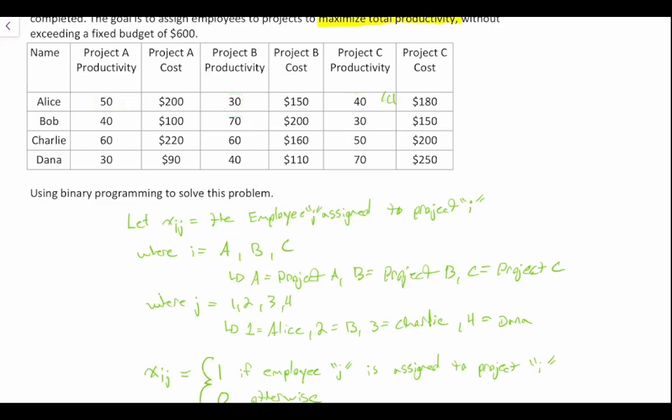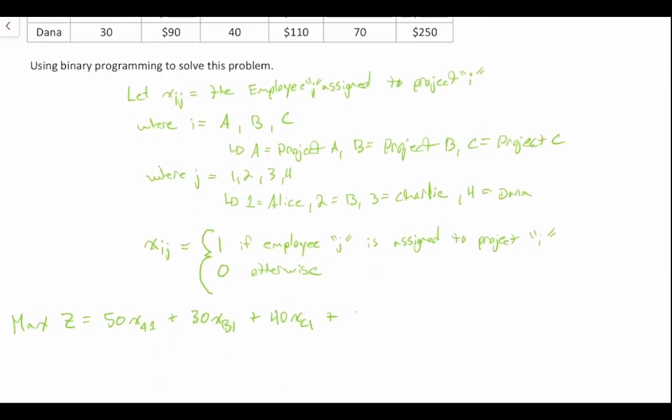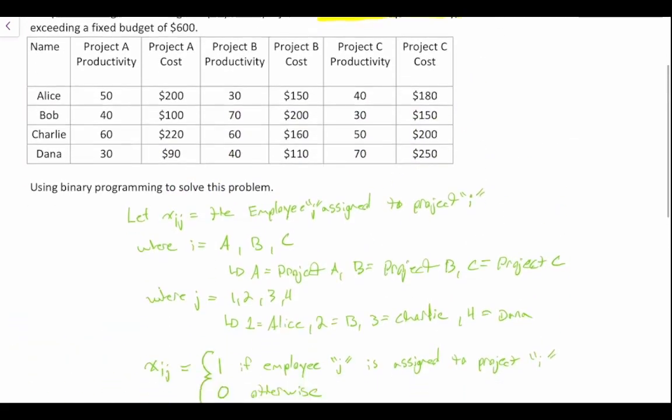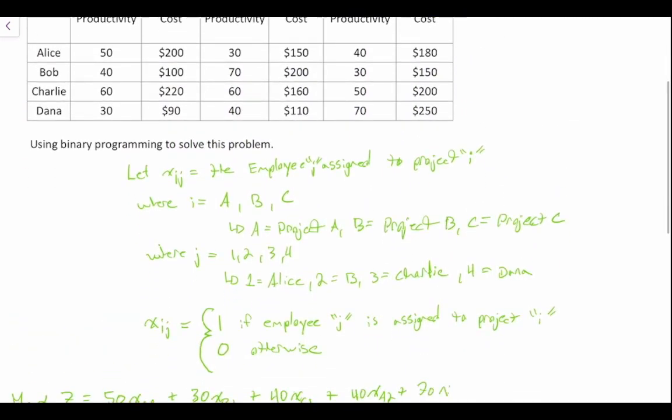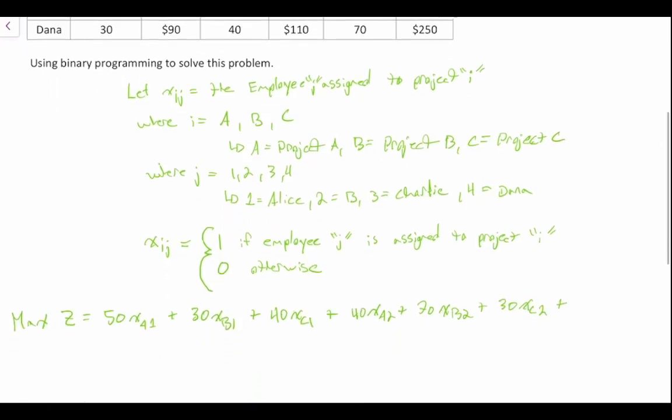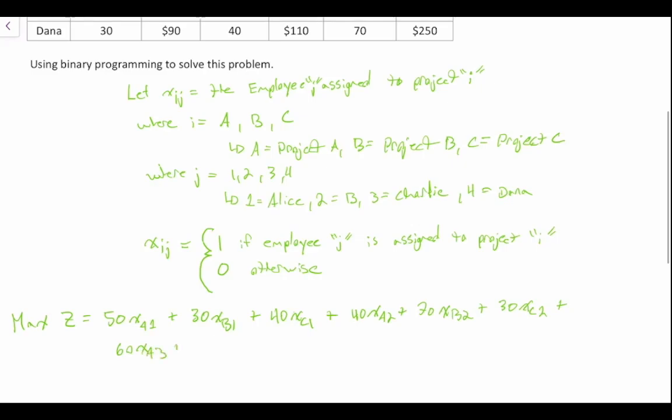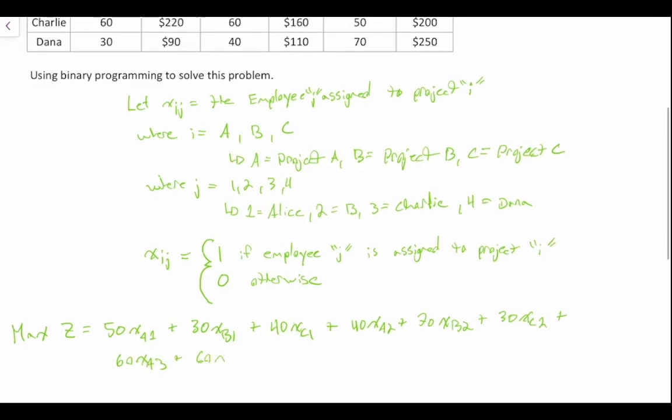Now that we've done that for Alice, we need to do that for all of our workers. So plus Bob, which is plus 40 XA2 plus 70 XB2 plus 30 XC2, plus Charlie, which is 60 XA3 plus 60 XB3 plus 50 XC3, plus Dana, which is 30 XA4 plus 40 XB4 plus 70 XC4. So that is our objective function.